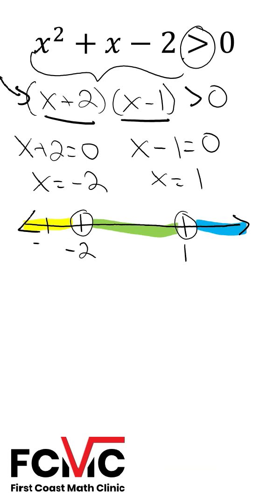So less than negative 2, I can check negative 3. Between negative 2 and 1, I can check 0. Greater than 1, I can check 2.